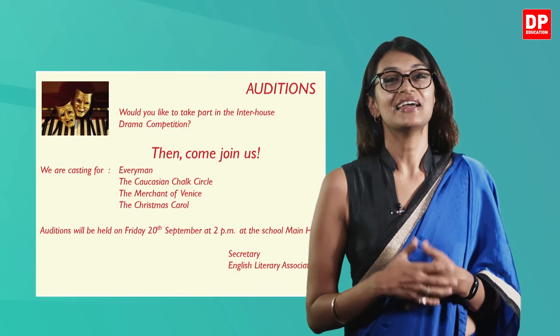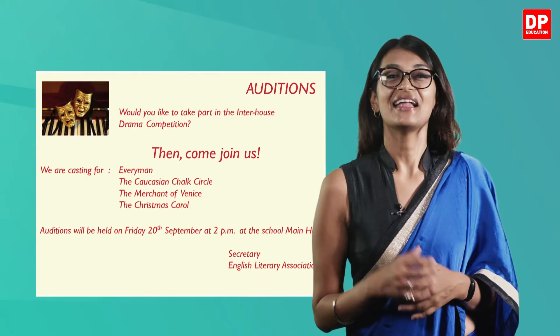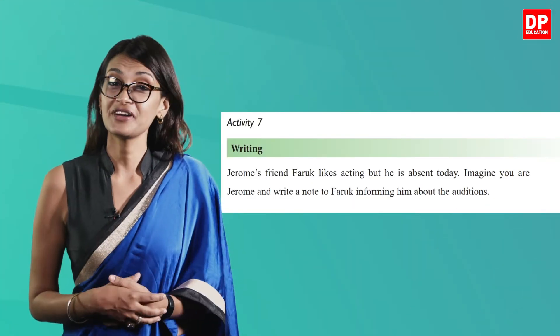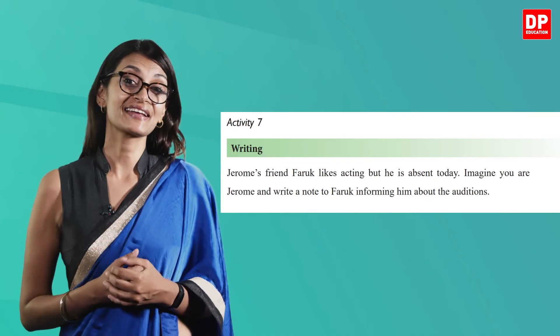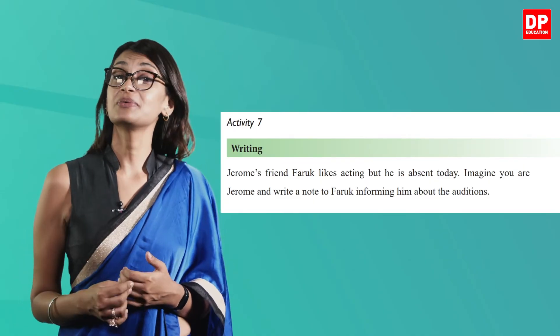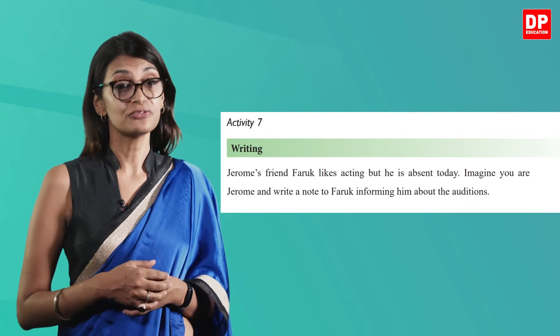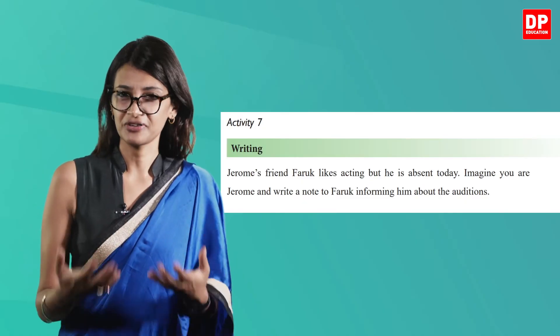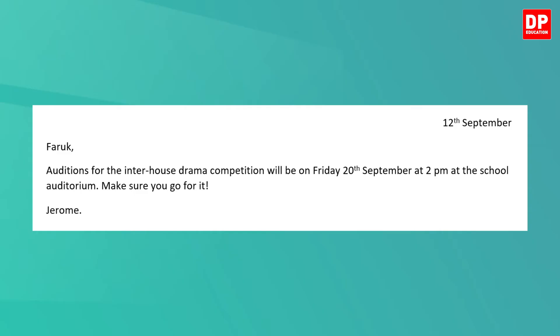Now let's look at Activity 7 on page 65. Jerome's friend Farrook likes acting but he is absent today. Imagine you are Jerome and write a note to Farrook informing him about the auditions. Let's now write a quick note to Farrook together: '12th September. Farrook, auditions for the interhouse drama competition will be on Friday 20th September at 2pm at the school auditorium. Make sure you go for it. Jerome.'